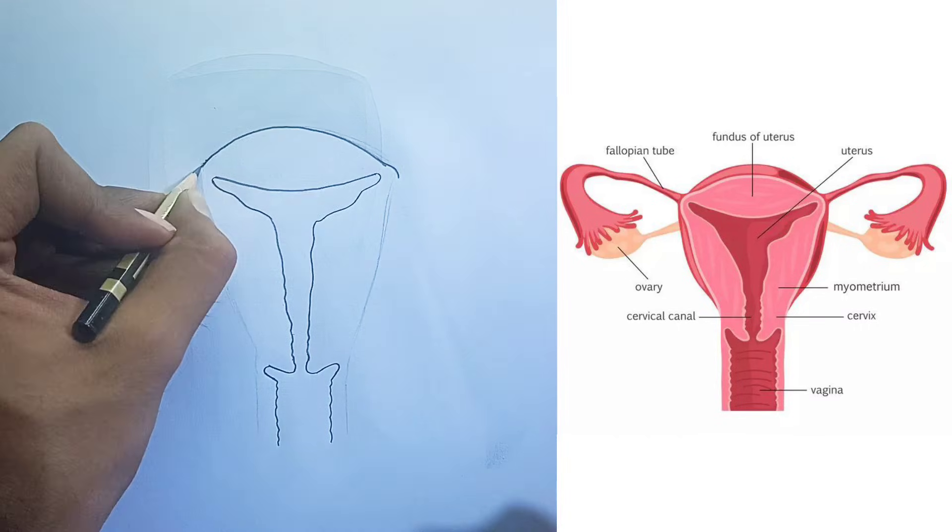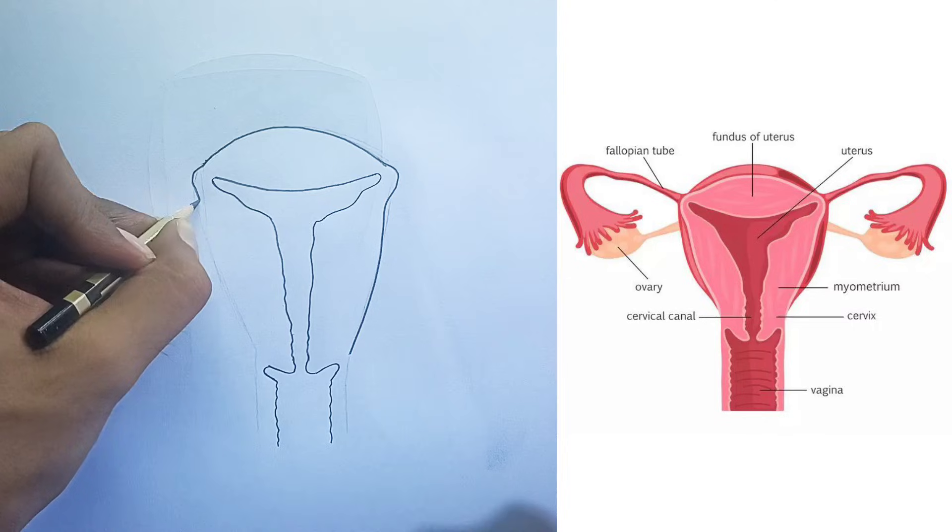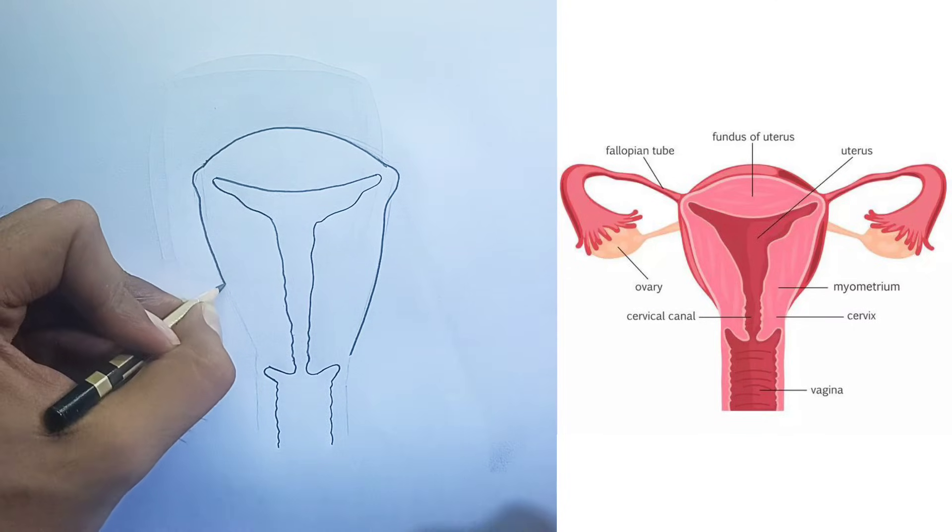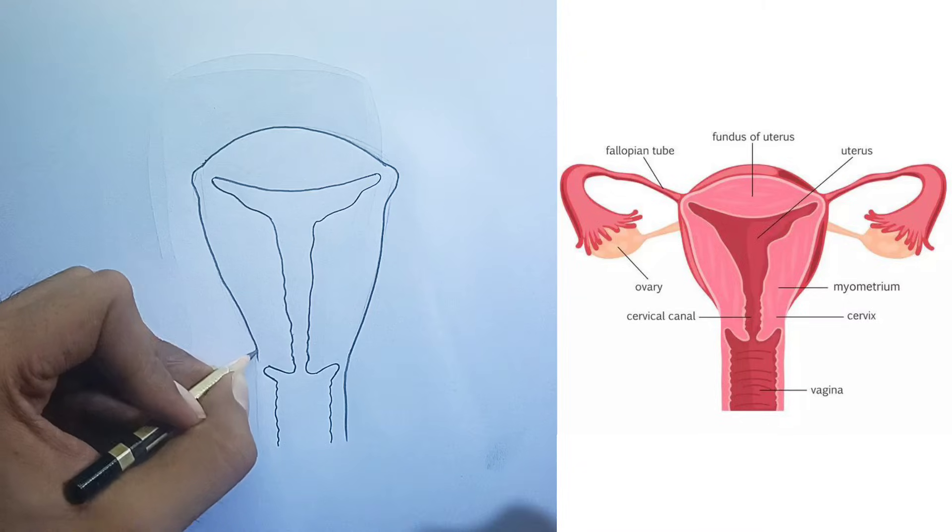Myometrium. This is the thick, muscular middle layer of the uterine wall. It's composed of smooth muscle tissue and is responsible for uterine contractions during labor and menstruation.